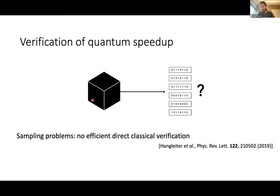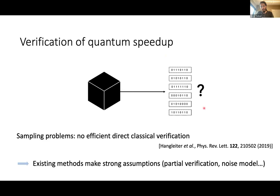It's very hard to check that this task was performed correctly because you're given a bunch of random numbers and asked to check whether they come from the right distribution. You can show this is impossible to do efficiently directly. The reason is that all these sampling models have output probability distributions that anti-concentrate — they look flat, without sharp peaks. Existing methods like those used by Google and USTC make strong assumptions, introducing partial verification and conjecturing it's sufficient to verify the full computational task. We can ask whether there are other approaches that would allow us to verify quantum speedup experiments.